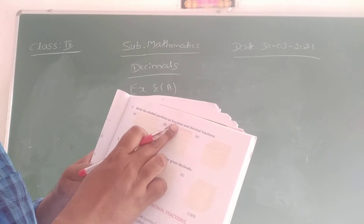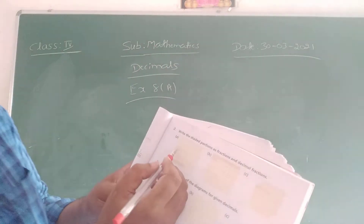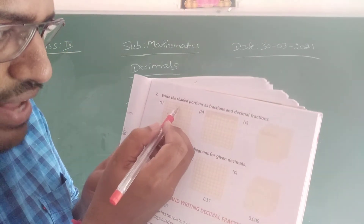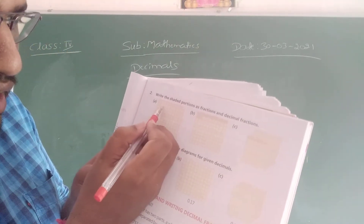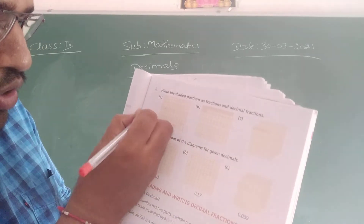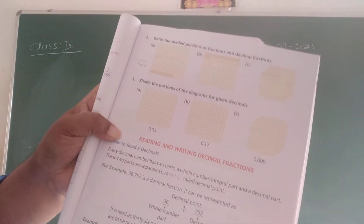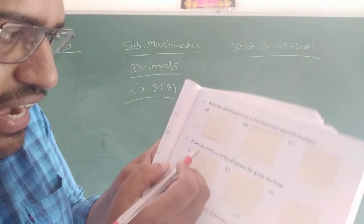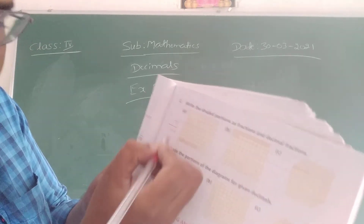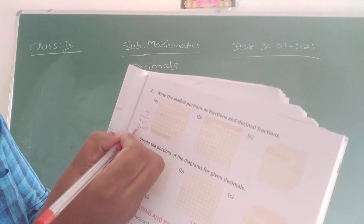Write the shaded portions as fractions and decimal fractions. Total boxes — count: 1 through 10, 10 through 100. Total 100 boxes are there. Out of 100 boxes, how many boxes are shaded? 1, 2, 3, 4, 5, 6, 7. So 7 by 100, and 7 by 100 can be written as 0.07.